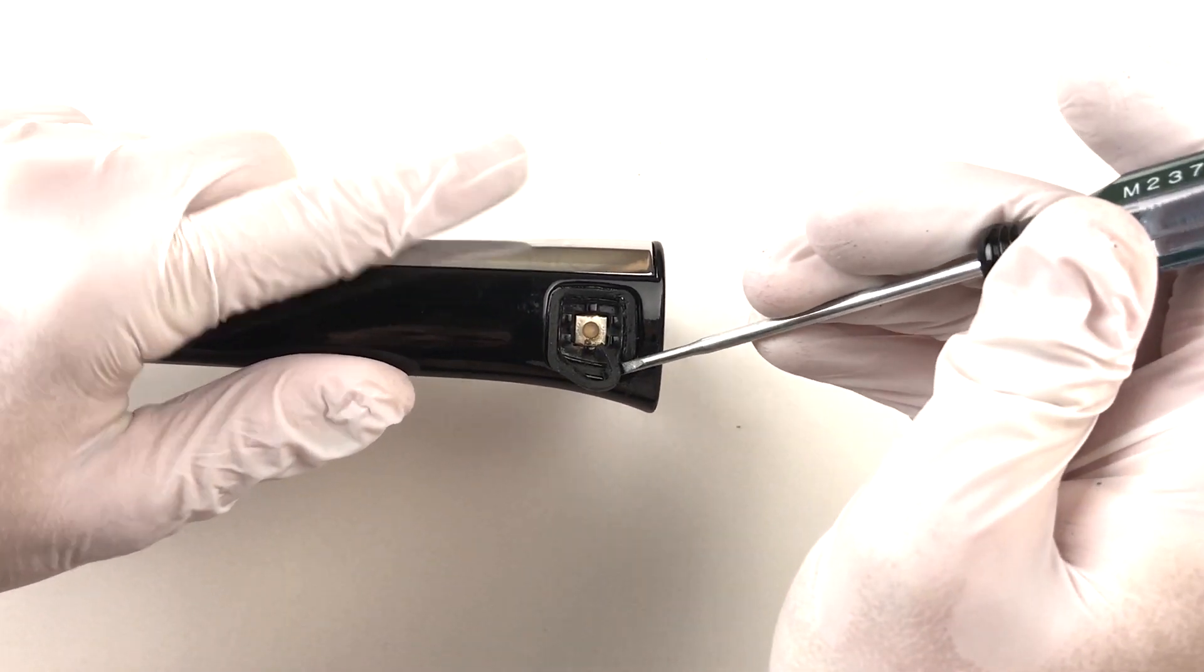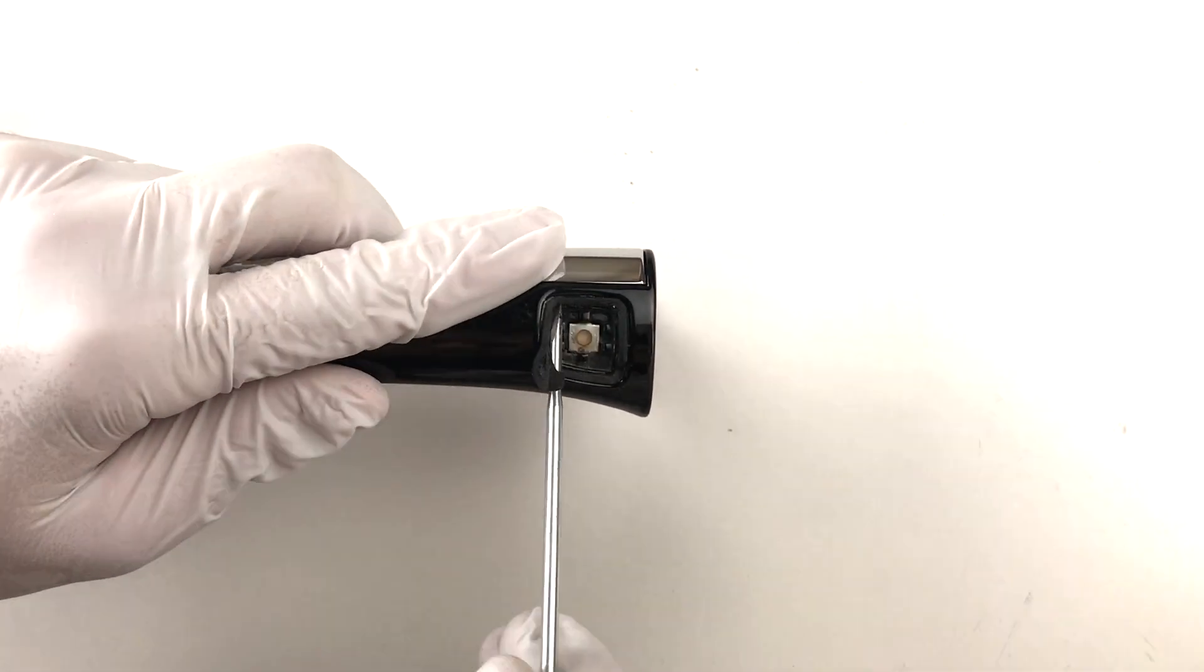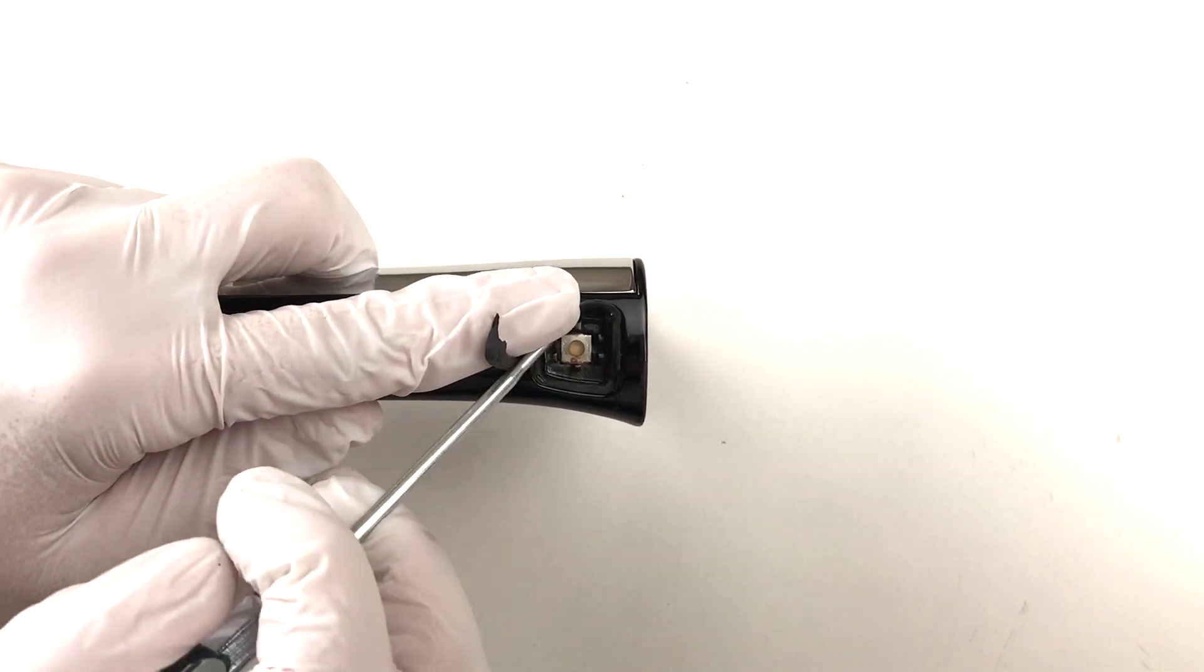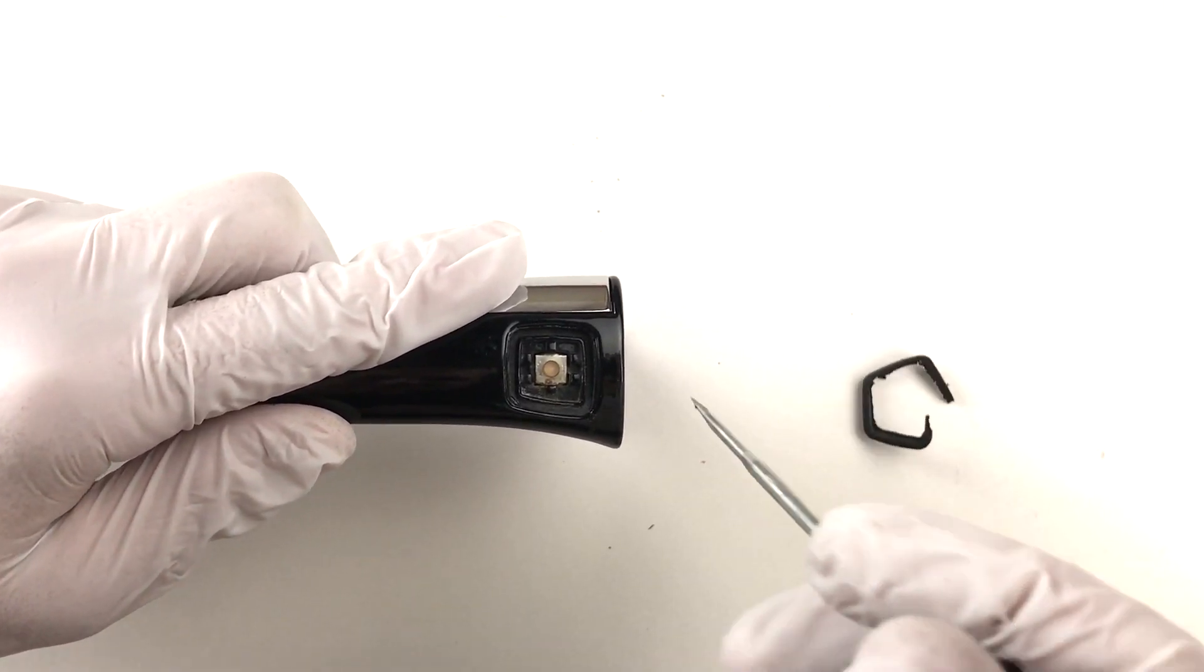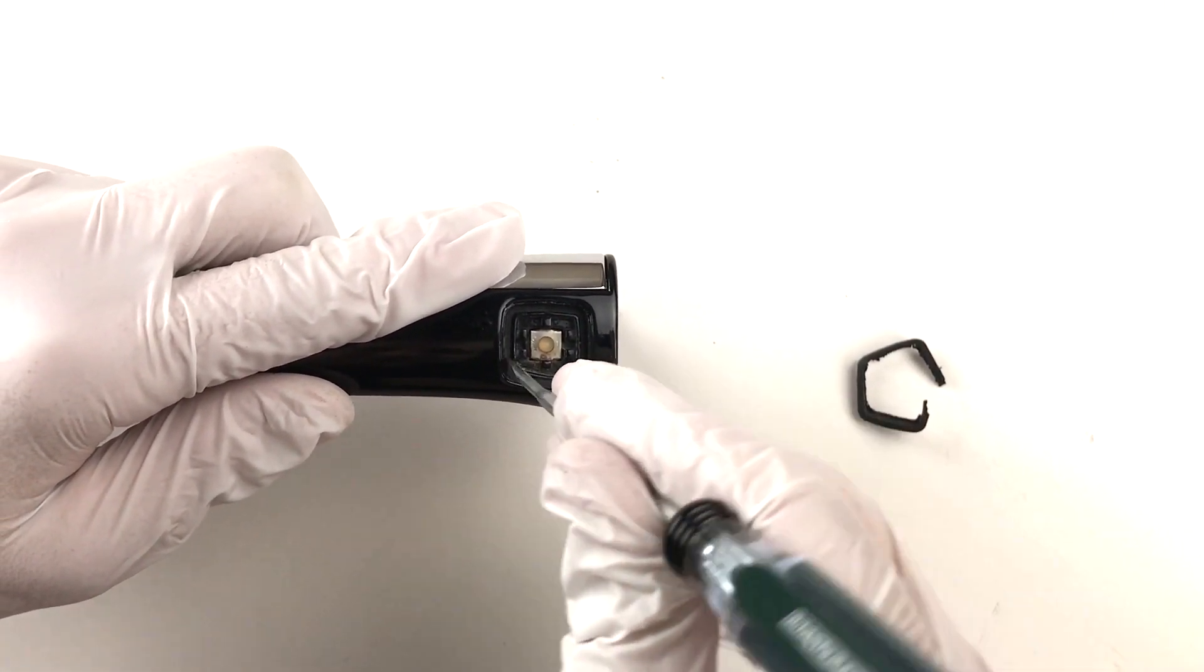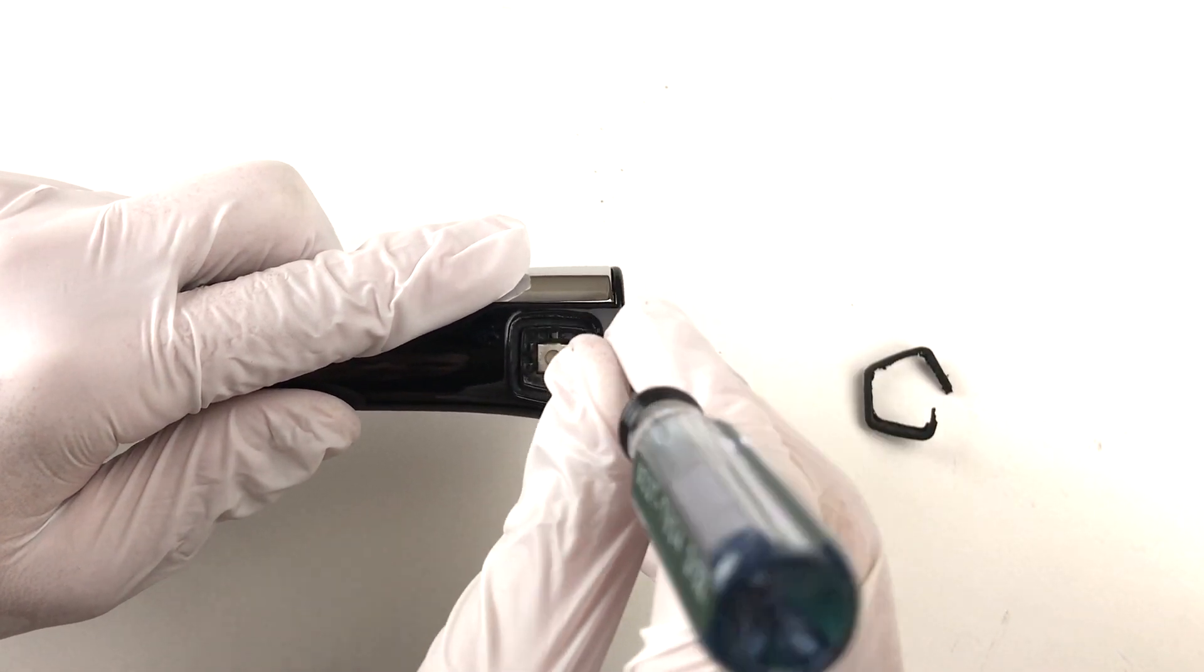Carefully remove the remaining pieces of the old cover. Scrape off any old glue or rubber around the edges to prepare for gluing.